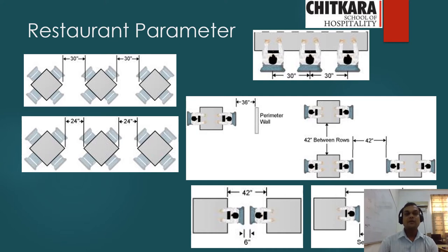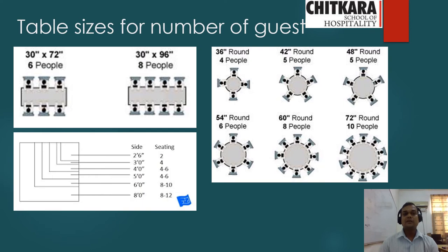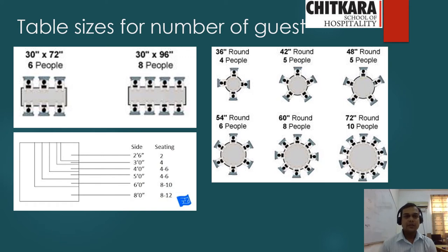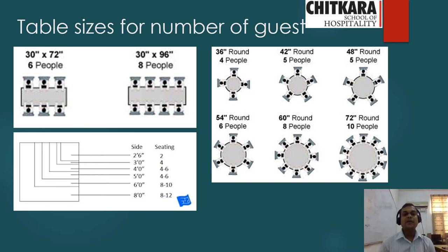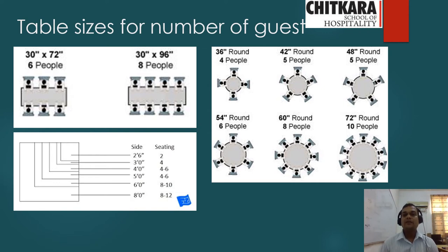Now let's talk about table sizes based on the number of guests. Three types of tables are used in restaurants: square, rectangular, and round. For rectangular tables, 30 inches by 72 inches seats six people. For seating eight people, the dimension would be 30 inches by 96 inches. These longer tables are used on the corner side of the restaurant and can be used for private dining rooms or family-type gatherings.